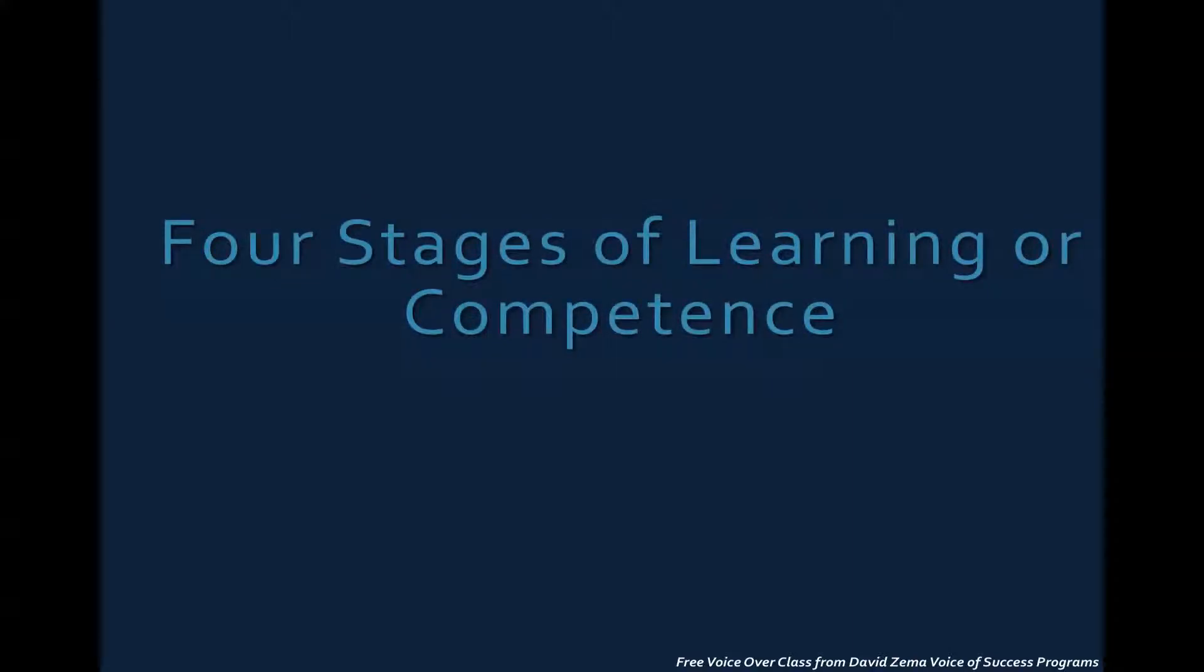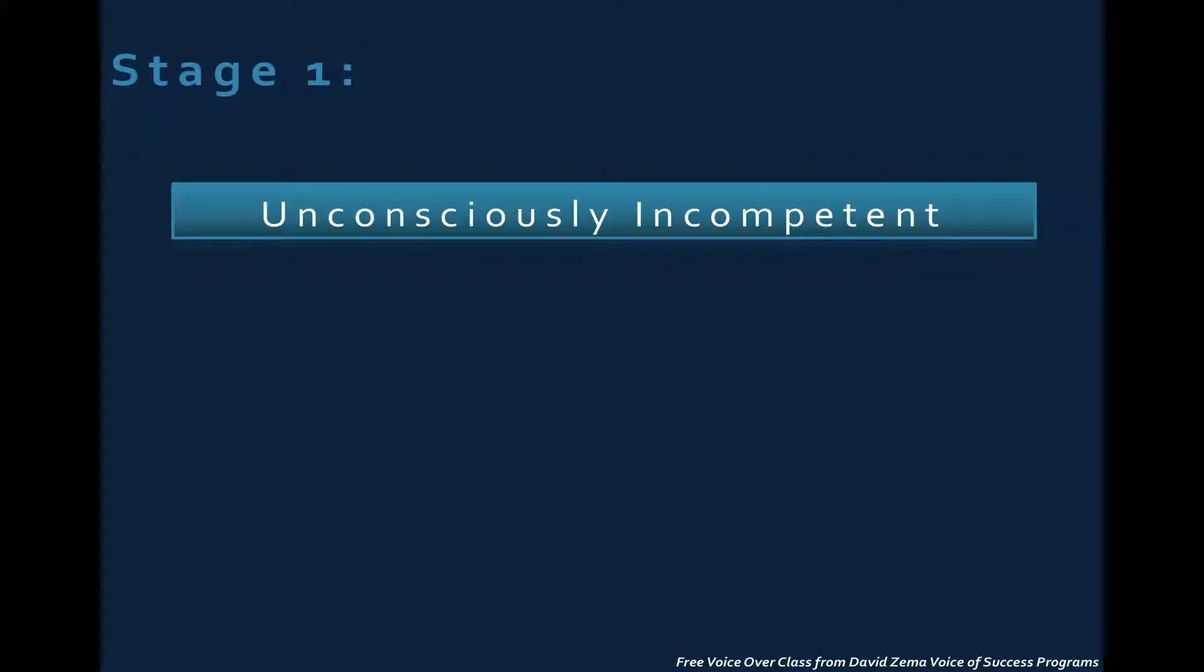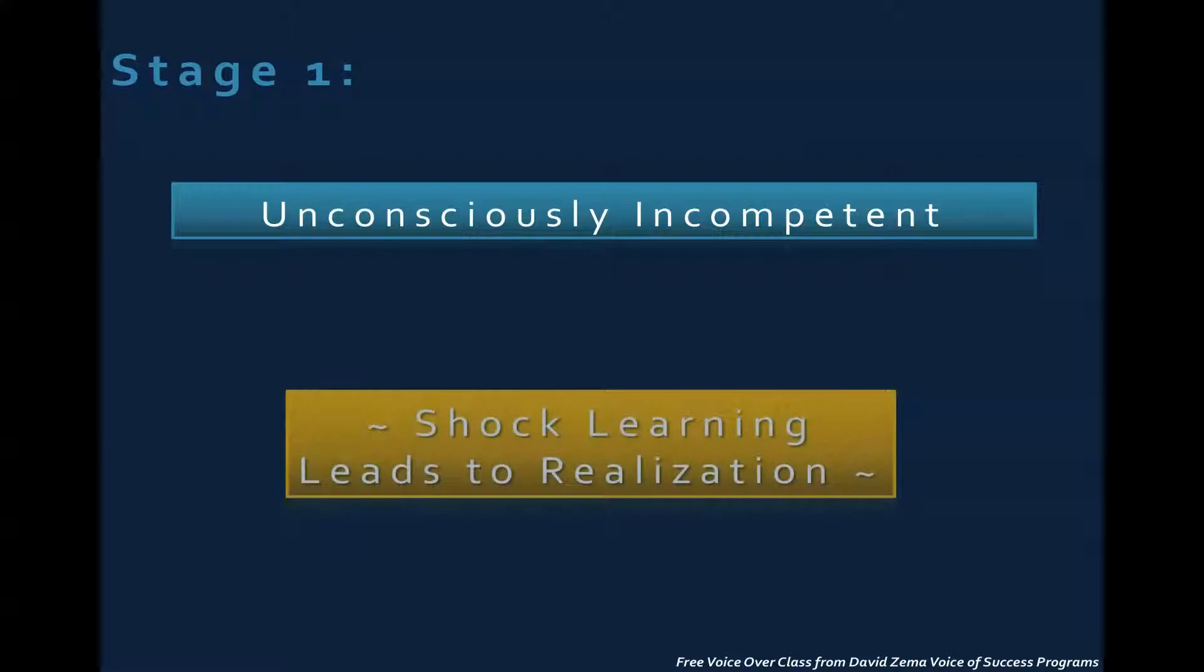All right, now the other part of learning that we're going to talk about are the four stages of learning. Now this is different. There were the three types of learning, and now it's the four stages of learning. I found these written up by a person named Richard Schultz, and I thought they would quite apply to what we're doing here. First stage is unconscious incompetent. You could say there are many people out there who are unconsciously incompetent. There are people who don't know that they don't know something, and that's when the shock comes in. That's where shock learning comes in handy, because it wakes you up, and you realize, oh, wow, there's something I don't know. That's what happens after the shock. So you really sometimes think that you know everything, but you don't.